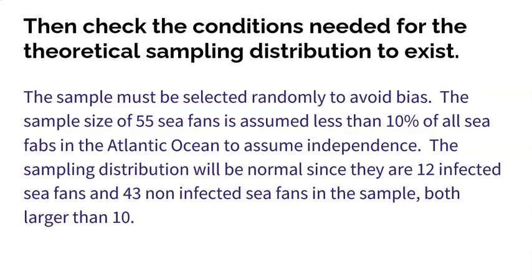Step two is checking the conditions. First, the sample must be random to avoid bias. So go back and make sure that it said that the sample was selected randomly. Second, the sample must be under 10% of the population to assume independence. I have no idea how many sea fans are in the Atlantic Ocean, but I'm just going to have to assume that 55 is less than 10% of them.